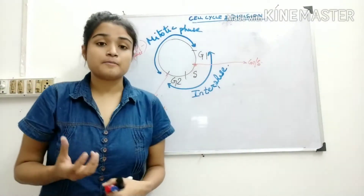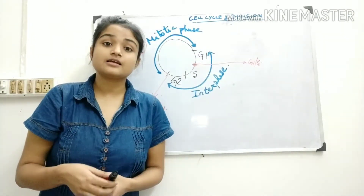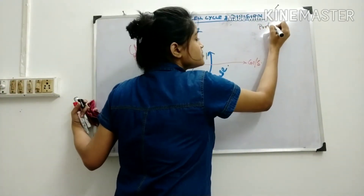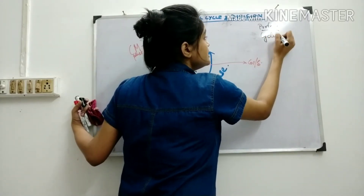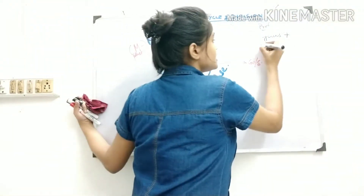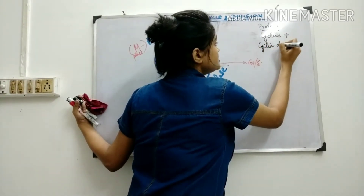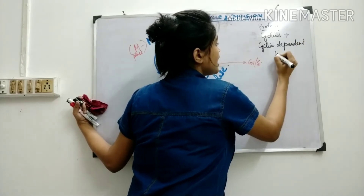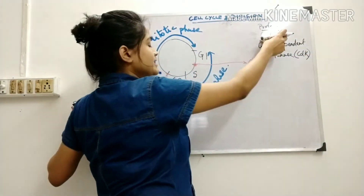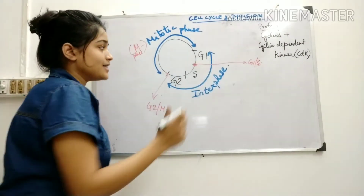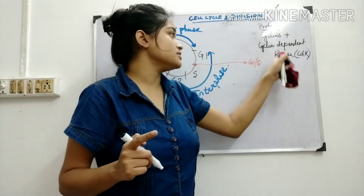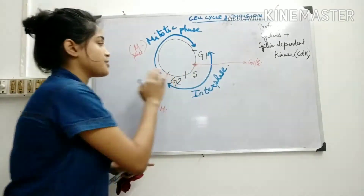These checkpoints are regulated by proteins called cyclins. Cyclins associate with a kinase protein called cyclin-dependent kinase, or CDK. In association, CDK and cyclin form a complex that regulates these checkpoints. The cyclin-CDK complex together regulates these checkpoints.